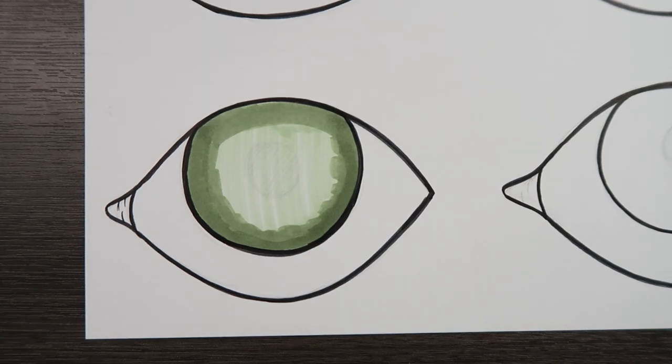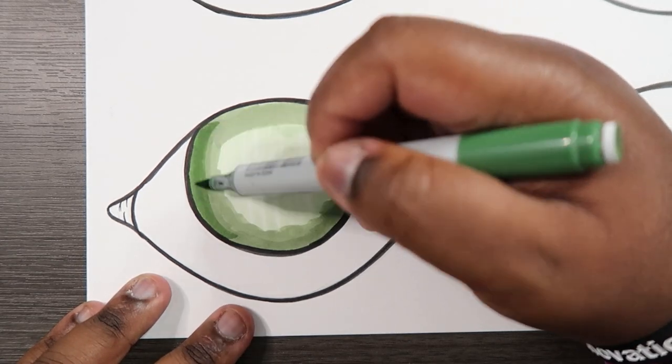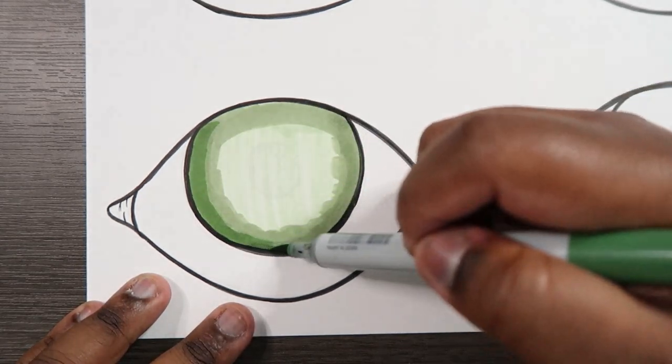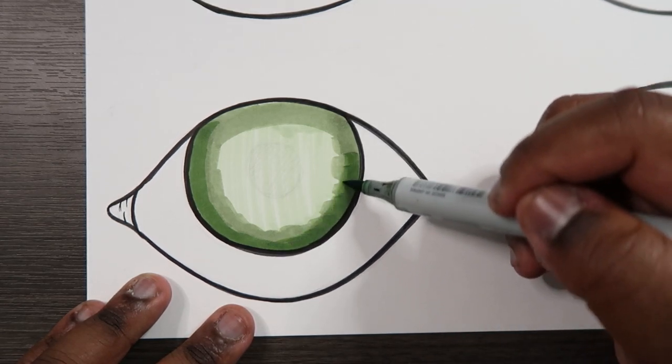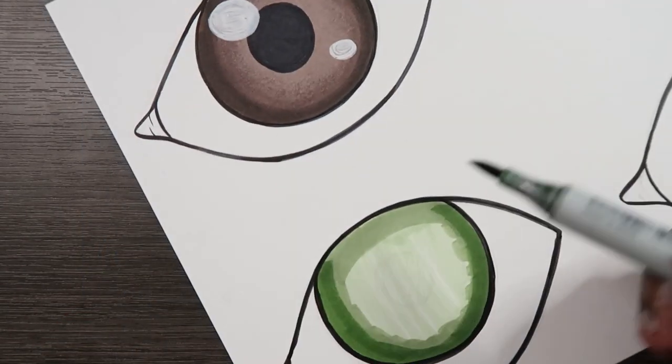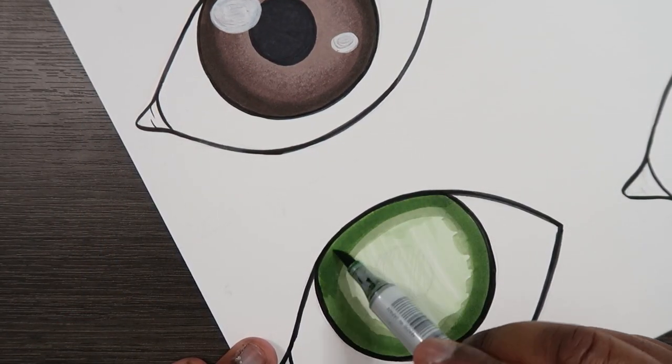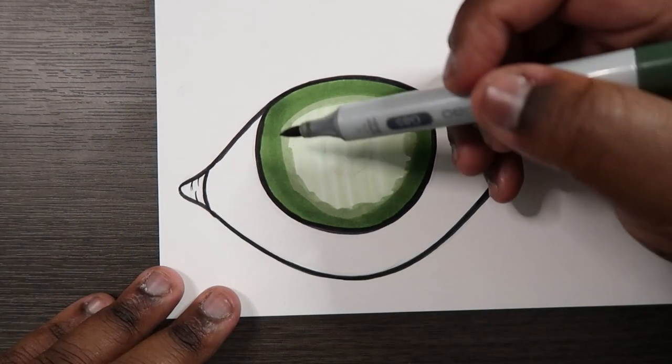All right. And now we can go in with our YG67. And this is actually kind of a more saturated green. But it still works. Okay now that we've done that we can work backwards from here on out.